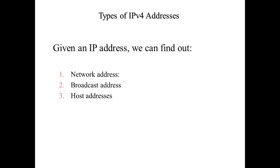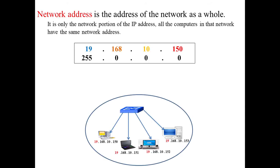Now let's move to the network address, broadcast address, and the host address. The network address is the address of the network as a whole — it identifies the entire network. There may be multiple computers within that network, but the network address represents the complete network itself. For instance, if all computers share the same first byte, say 19, then 19 identifies the network address of that network.